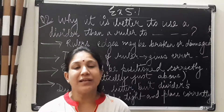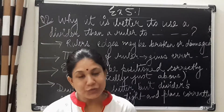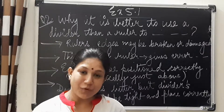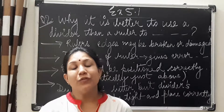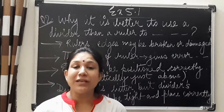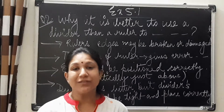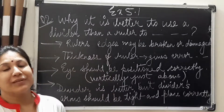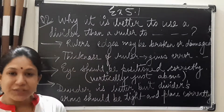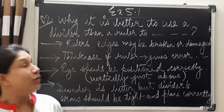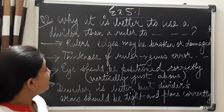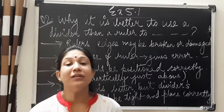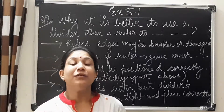Let us understand question 2 of exercise 5.1 from NCERT Mathematics for class 6. The second question is: why is it better to use a divider than a ruler?